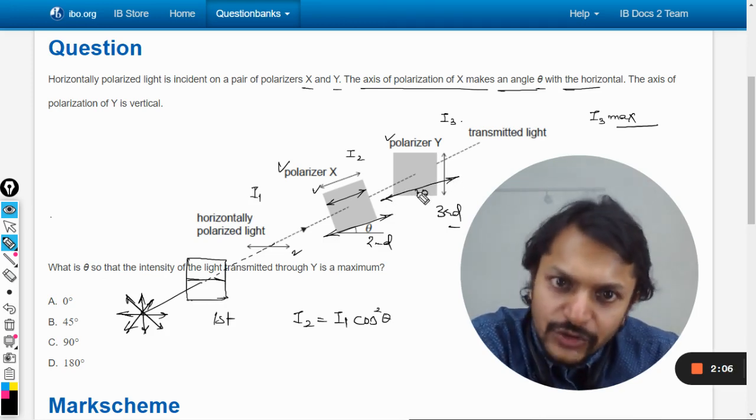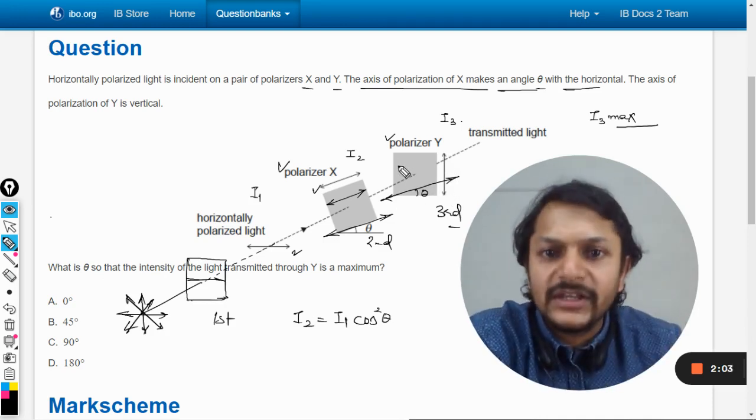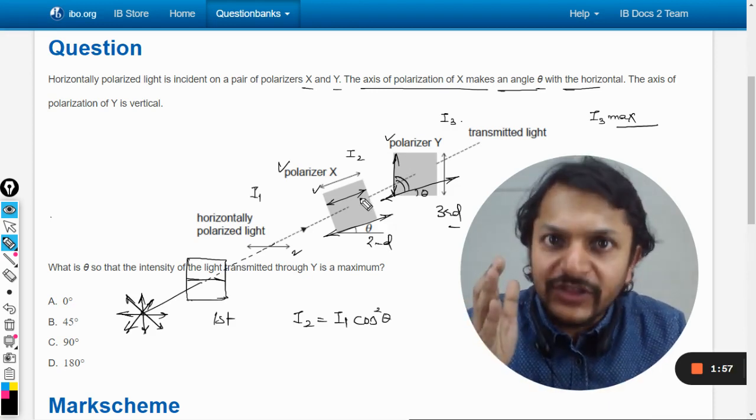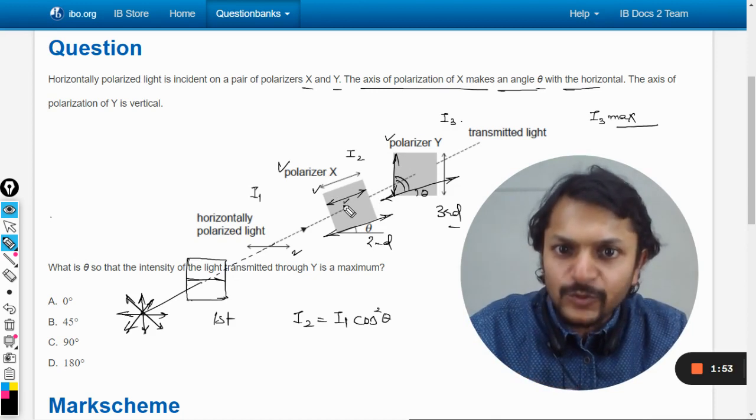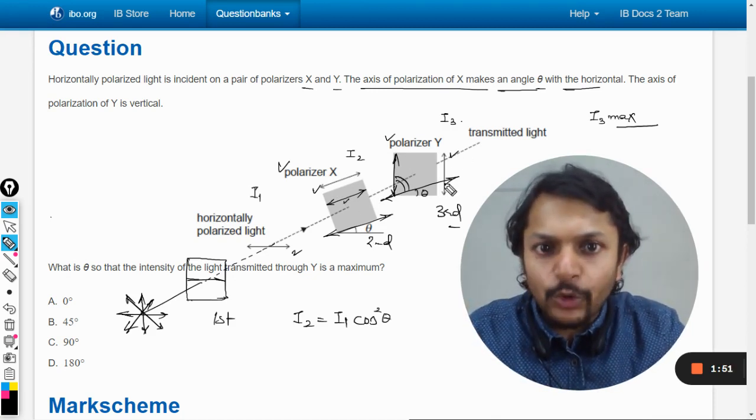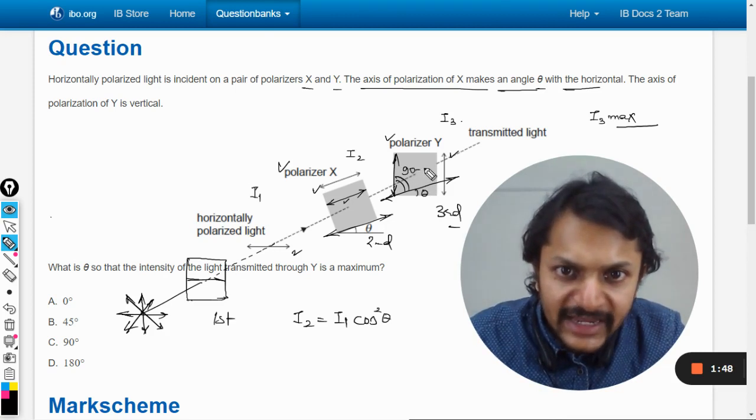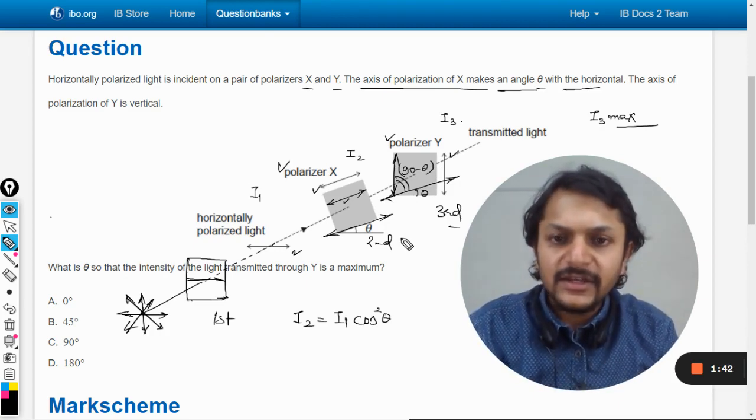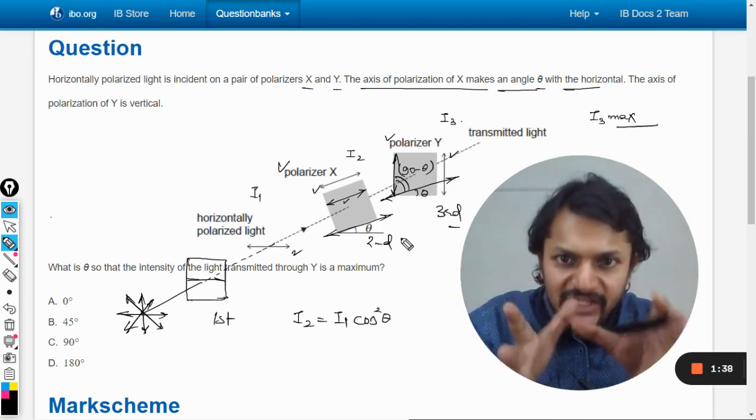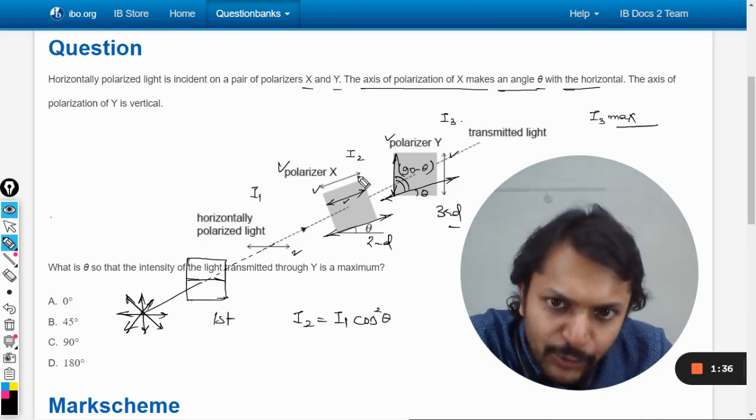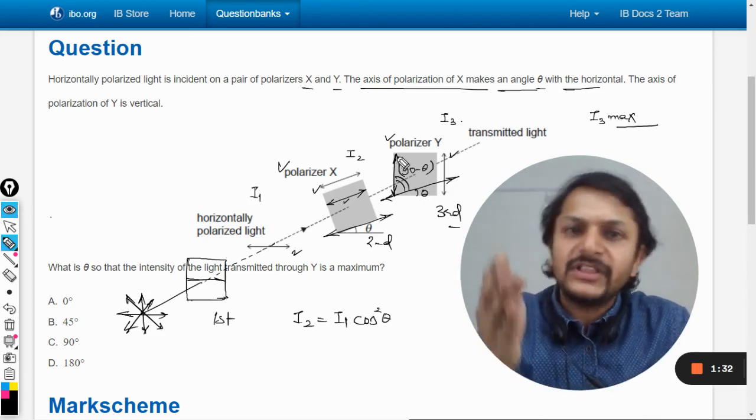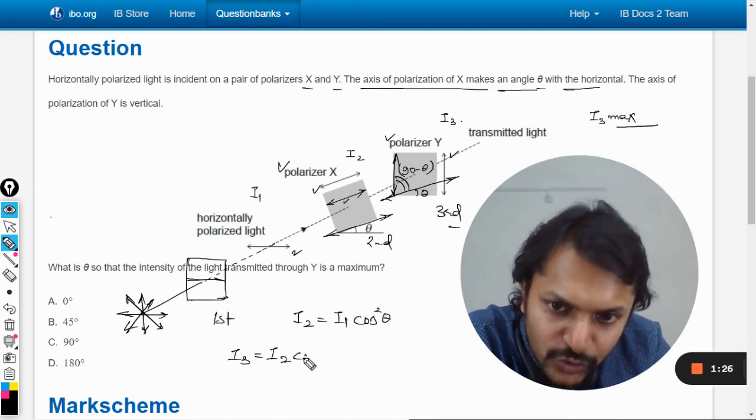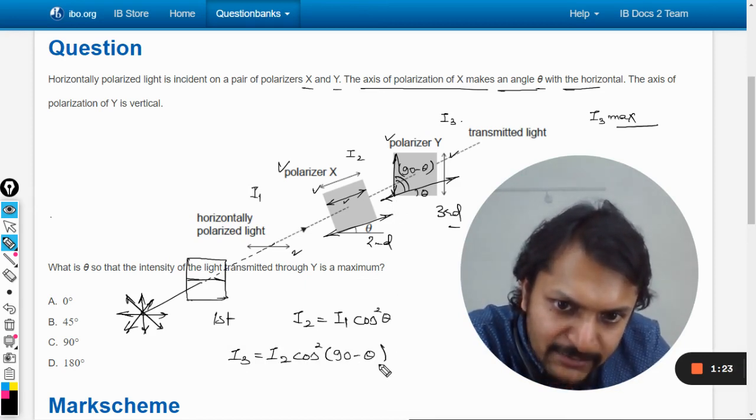So this is theta. So this is theta already. But this axis is now vertical. So this is now vertical. So we have to technically find the angle between the output of the light after the polarizer X, which is this one, with the vertical axis of polarizer Y. Now what it will be? Obviously it will be 90 minus theta. Isn't it? Like if this is theta, this will be the 90 minus theta angle. Just try to think about it. It's really a bit confusing. I would say this is the polarizer, the light is coming out of this and the angle with the another polarizer will be 90 minus theta. So I can say that i3 will be i2 into cos square 90 minus theta.